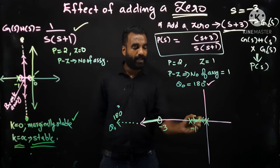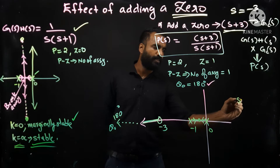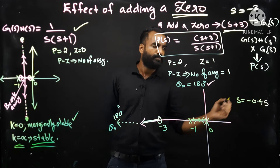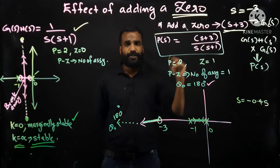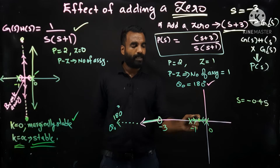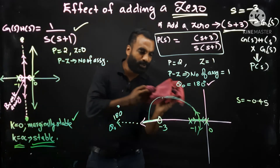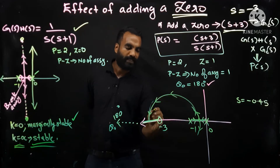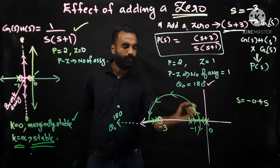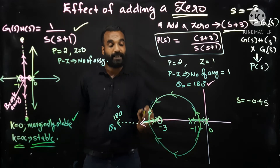A breakaway point occurs between s=0 and s=-1. You can calculate it by differentiating the open loop transfer function and equating to zero — the value is approximately s≈-0.45. Two branches split at the breakaway point and form a semicircle. One branch reaches the break-in point and travels toward the zero at s=-3, while the other branch eventually also passes through a break-in point at approximately s≈-4.